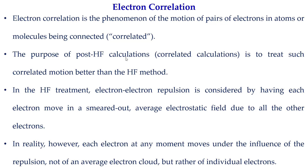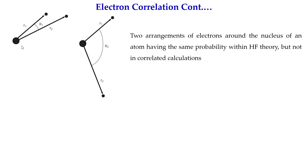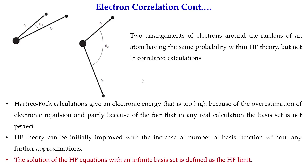Let's look at an image to explain this more clearly. There is a nucleus and two electrons. In the first figure the electrons are quite near to each other, and in the second they are far apart. Hartree-Fock does not consider these two systems as different because it considers only an average cloud, not the explicit positions of the other electrons — which introduces an error in energy.